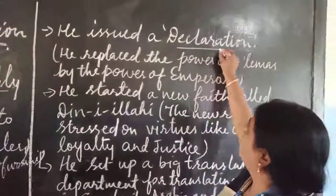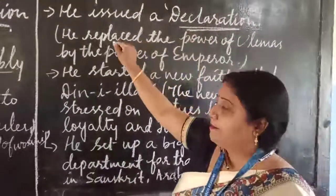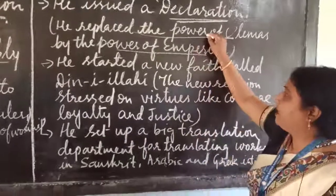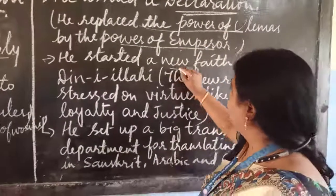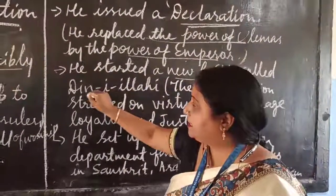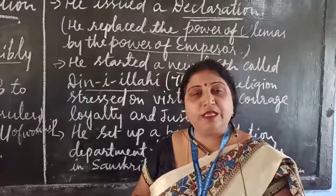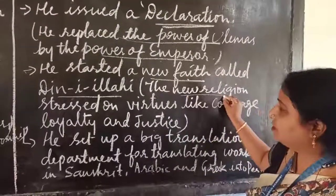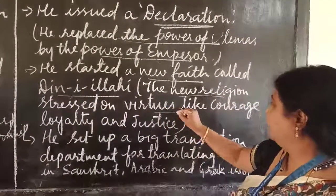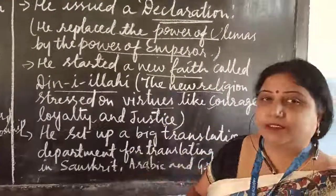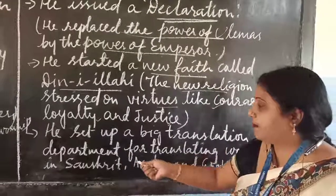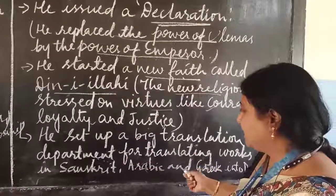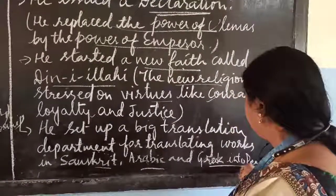He issued a declaration replacing the power of the Ulemas with the power of the emperor. He started a new faith known as Din-i-Ilahi, but he never forced people to accept it. This faith stressed on virtues like courage, loyalty, and justice. He also set up a large translation department, through which works in Sanskrit, Arabic, and Greek were translated into Persian.